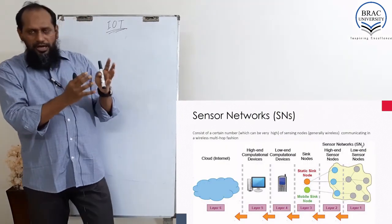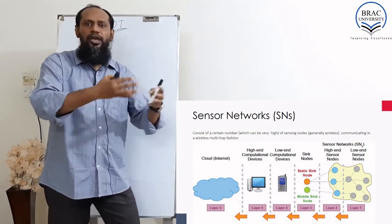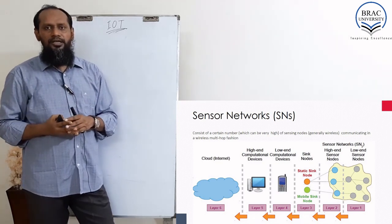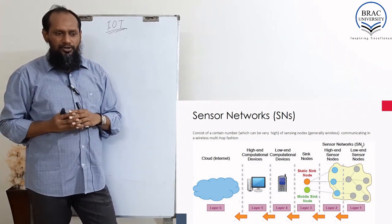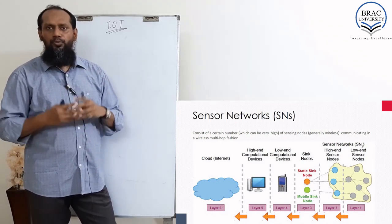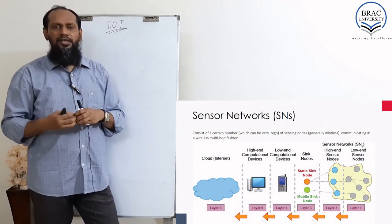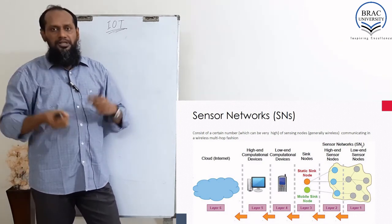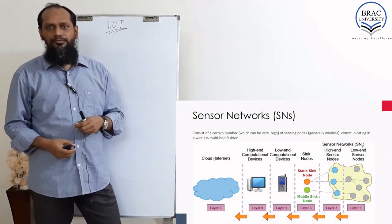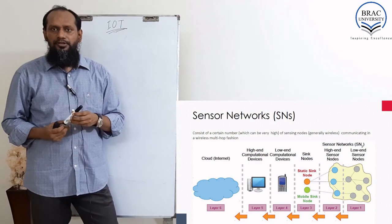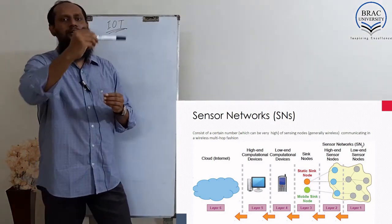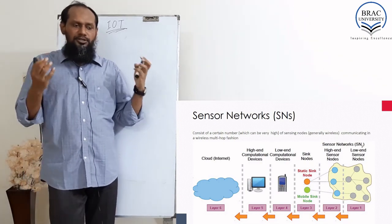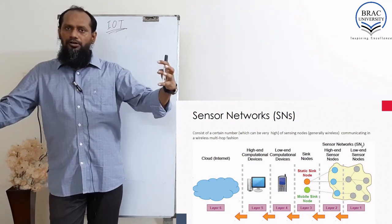This is also a different way of describing the sensor network architecture. On the right side in layer one, it is actually the sensors — low-end sensor nodes — which are sensing temperature, humidity, gas leakage, air, amount of light, amount of ink inside the pen, or the gyroscope. It will use sensors for gathering the data.